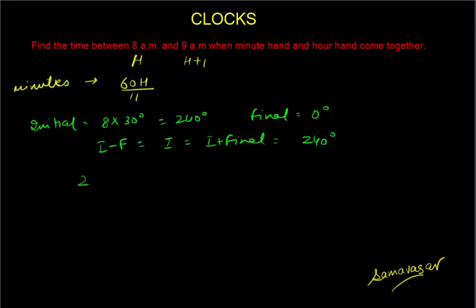So initial angle minus final angle is the same as initial angle, which is also the same as initial plus final, which is the same as 240 degrees. So when I need to solve this I basically get 240 divided by 11 by 2, which is 480 by 11, and when I solve this I get 43 7 by 11 minutes.